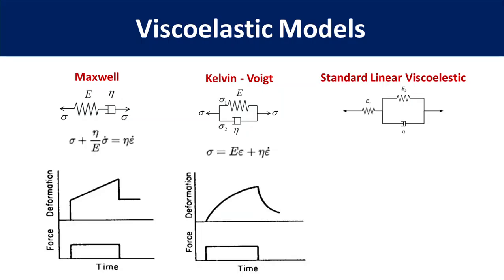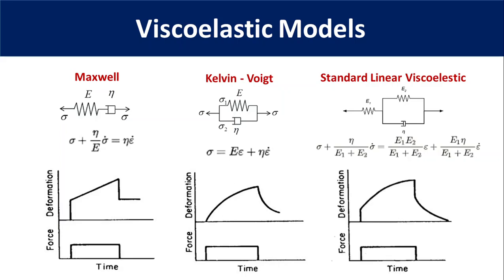A more complex but comprehensive model is the Standard Linear Viscoelastic (SLV) model, which is a combination of the Maxwell and Kelvin-Voigt models, represented by the equation shown in the slide. It is the simplest model that accurately describes both the creep and stress relaxation behavior of a viscoelastic material. Using these models, we can easily derive the spring constant and viscosity of the dashpot corresponding to a particular polymer, which can help predict material behavior under different conditions — a very important aspect when designing a load-bearing structure.